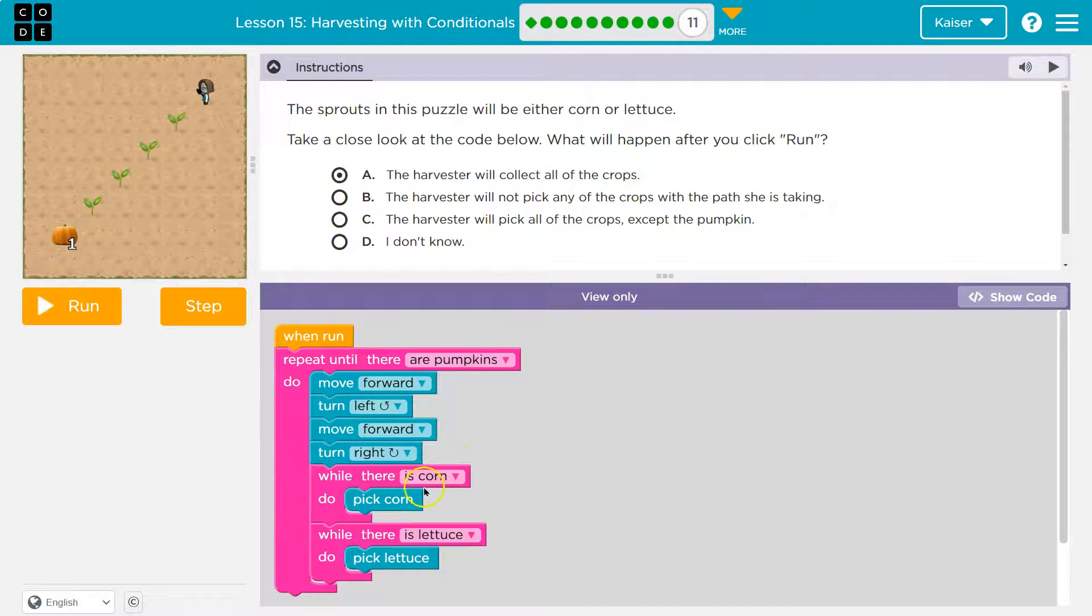So I'd pick a piece of corn, hit the bottom of our while there's corn loop, and while there's corn, I check again. Hey, is there still corn? So if there was two pieces of corn, this would be true again. I do pick the corn, and I check a third time. Let's say this time there's no corn, false.